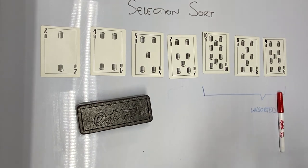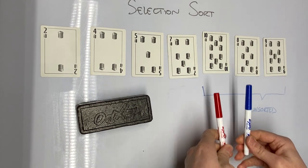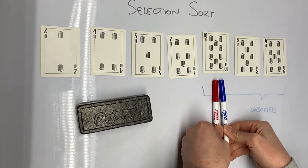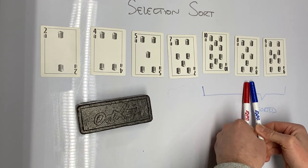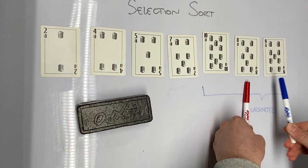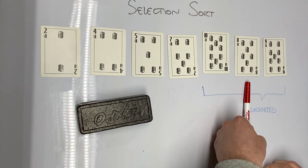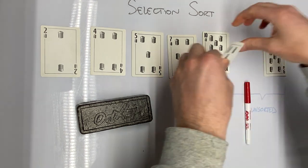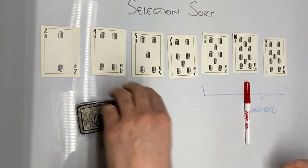We're down to three cards in our unsorted region. Ten is the initial card — it's the smallest. Eight is less than ten, so it is now the smallest. Nine is not. So eight is the smallest card; we swap it with the card at the beginning.